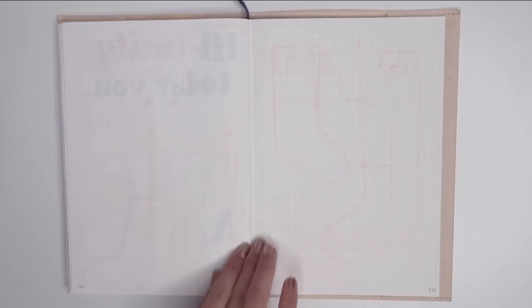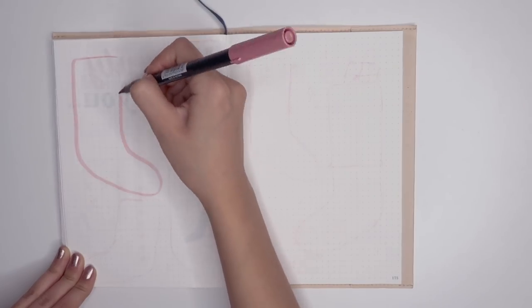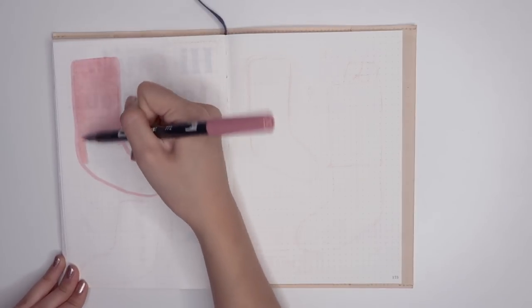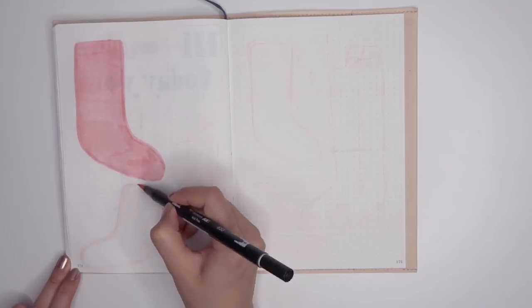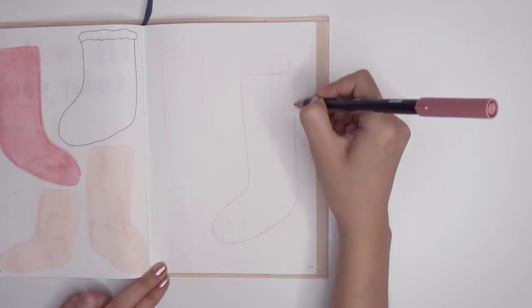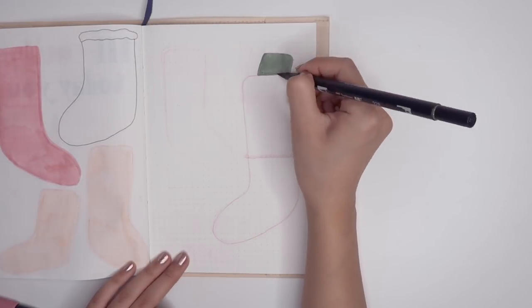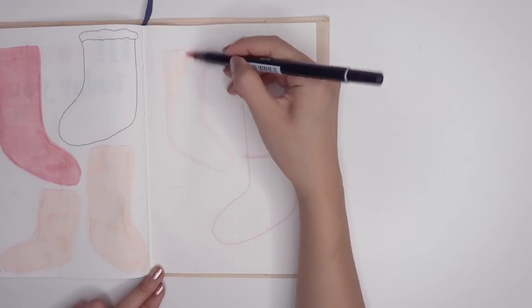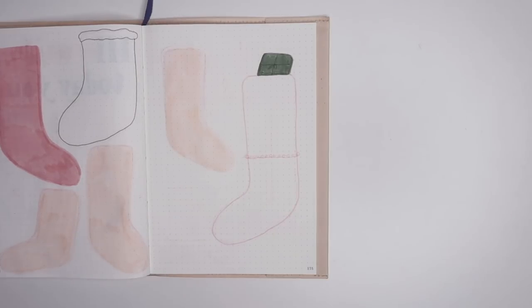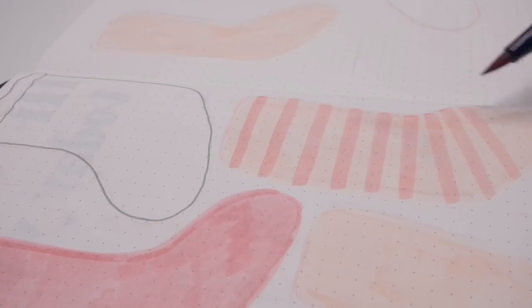Moving on to the weekly spreads, I started out with incorporating the shape of the month for my first weekly spread, which is the stocking shape. I made sure to only fill out the stockings that had a lighter color so that I could still write on it and actually be able to see what I wrote. Doing so also provides the spread with enough variety so it looks more open and less crowded.